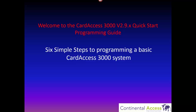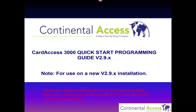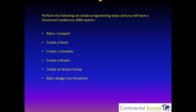Welcome to the CardAxis 3000 version 2.9.x Quick Start Programming Guide. These are the six simple steps to program a basic CardAxis 3000 system. Refer to the CardAxis 3000 Quick Start Programming Guide, which can be found on the CardAxis 3000 DVD or in the Continental Technical Document Library. To program the CardAxis 3000 software, you need to perform the following six simple programming steps, and you will have a functional CardAxis 3000 system.